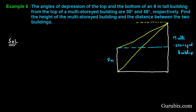From this horizontal level, we have two angles of depression: this angle is 30 degrees and this angle is 45 degrees. Now we have to find the height of the multi-story building and the distance between the two buildings. We shall name these points A, B, C, D, and E.